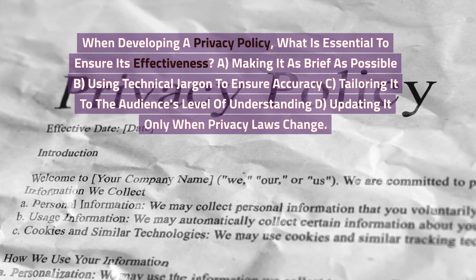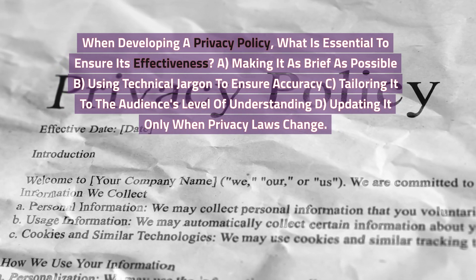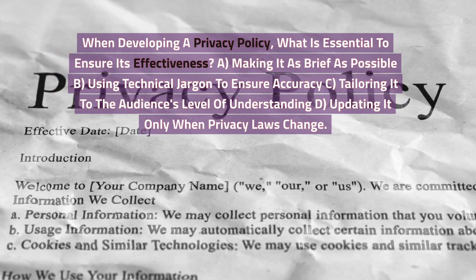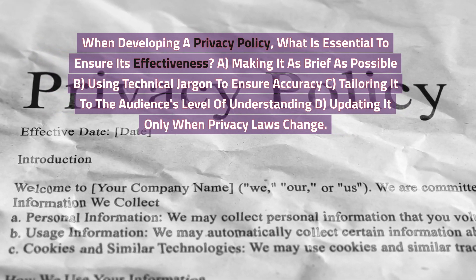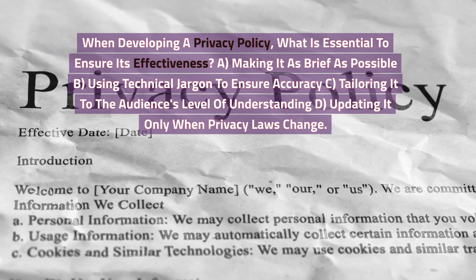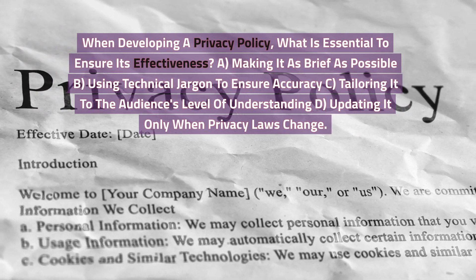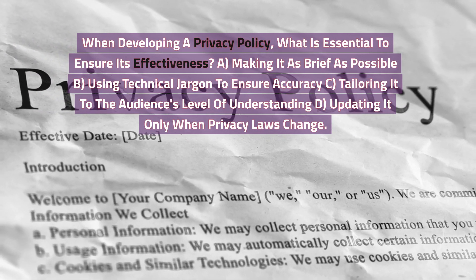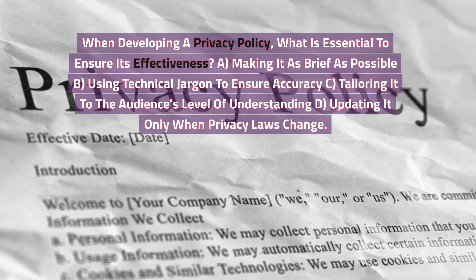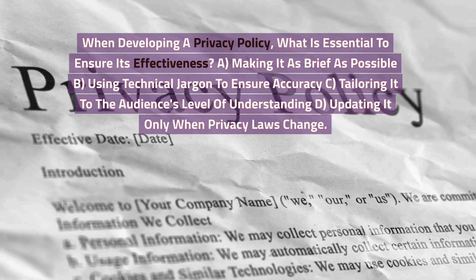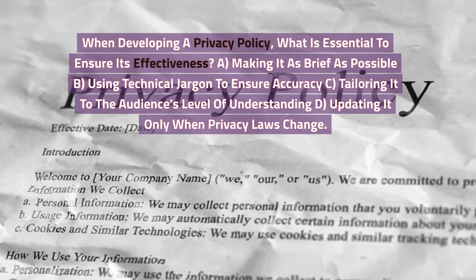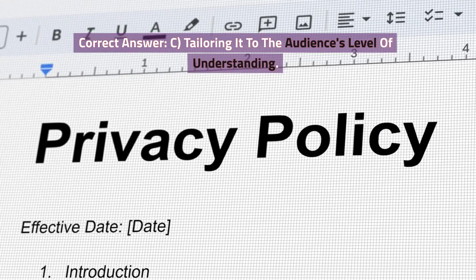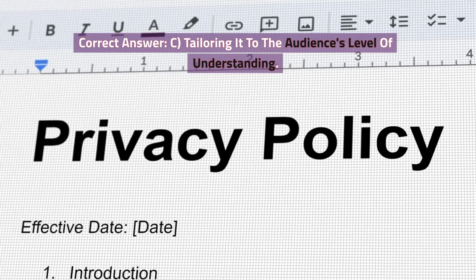When developing a privacy policy, what is essential to ensure its effectiveness? A. Making it as brief as possible. B. Using technical jargon to ensure accuracy. C. Tailoring it to the audience's level of understanding. D. Updating it only when privacy laws change. Correct answer: C. Tailoring it to the audience's level of understanding.